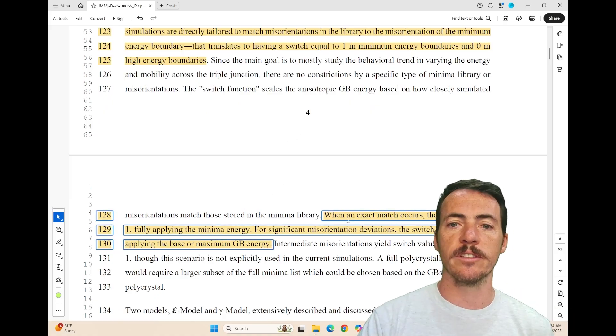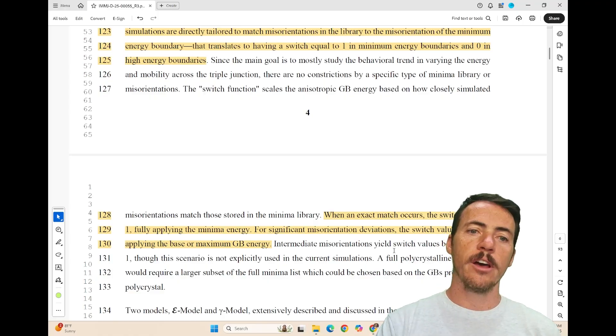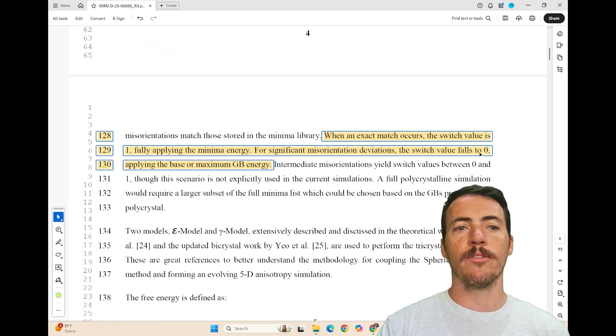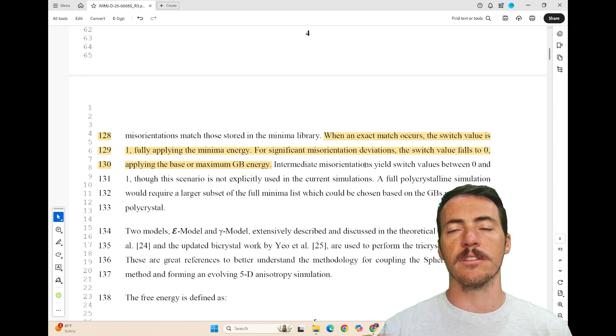It says when an exact match occurs, the switch value is set to one, applying the minimum energy. And if there's a significant misorientation deviation, then that switch value would fall to zero, applying the base or the maximum grain boundary energy. Obviously intermediate misorientations could be between zero and one, but that's not considered in the simulation.